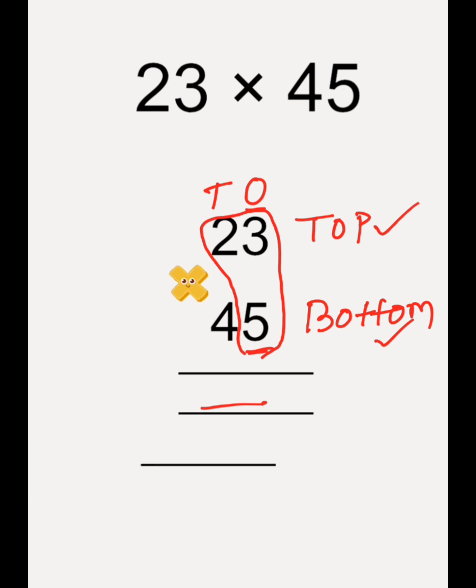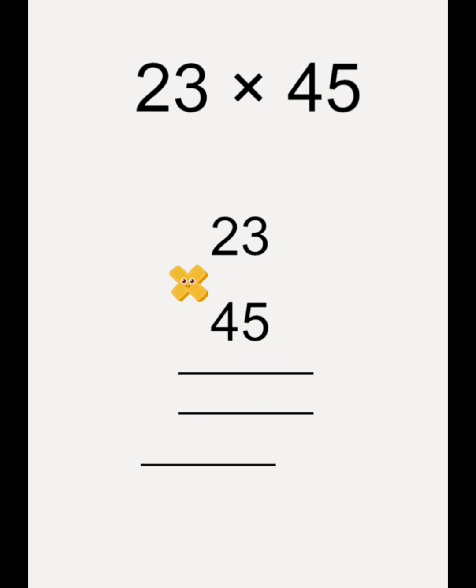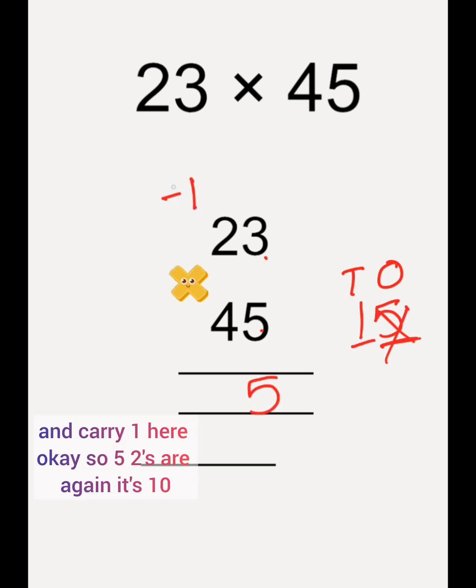First we are going to start from 1's place with 1's place. So 5 3's are 15. The 1's place value is 5, you are going to write here 5 and carry 1 here.